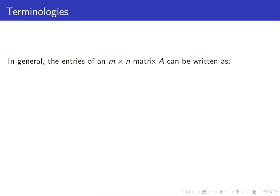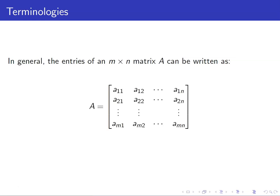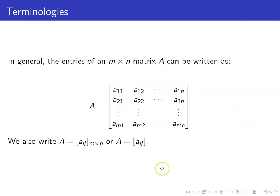In general, the entries of an m by n matrix A can be written as follows. Here I have m rows and n columns. We also write A to be equal to [a_ij] m by n to denote the size, or most of the time we just use this notation.